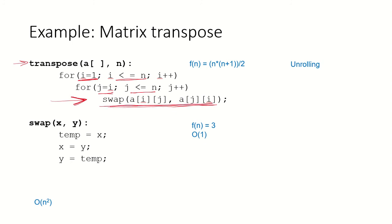We have to know how many times this swap function will be called and how much time this swap takes every time it is called. Let us see what the function is and what is the time complexity of this swap function. If you see, this statement will take 1 time, this will take 1, and this will also take 1. So the total is 3, the growth rate is 3, and we say that this is constant time. So we know that every time swap is called, it is going to take constant time only.